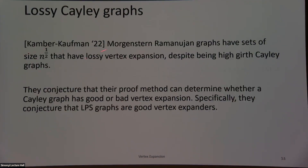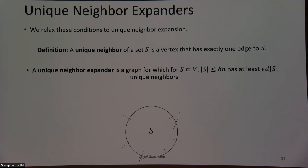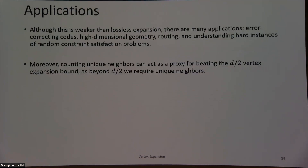For example, in the Capalbo-Reingold-Vadhan-Wigderson construction, we actually show that sets of that size are not unique neighbor expanders. They're using fields F_q, and the field has to be at least prime — that's the source of that issue.